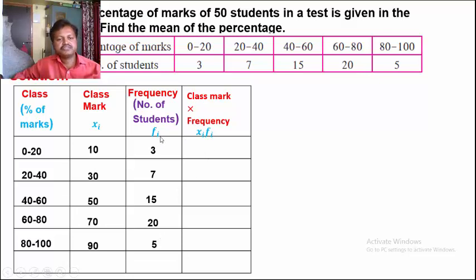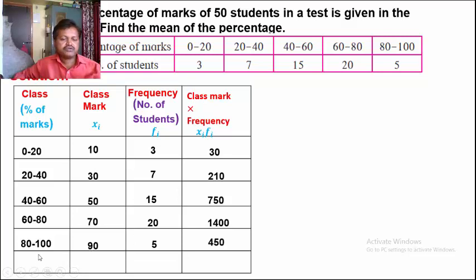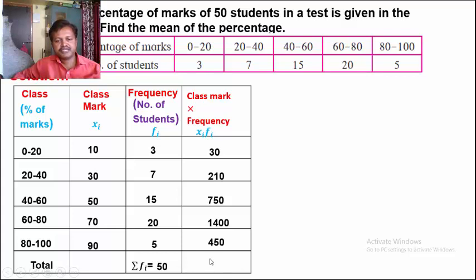In the last column, write the product of Xi and Fi: 10 × 3 = 30, 30 × 7 = 210, 50 × 15 = 750, 70 × 20 = 1400, and 90 × 5 = 450. In the last row, Sigma Fi = 3 + 7 + 15 + 20 + 5 = 50. And Sigma Xi Fi = 2840.